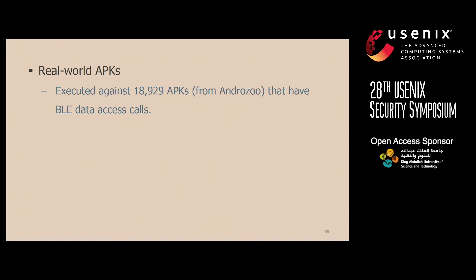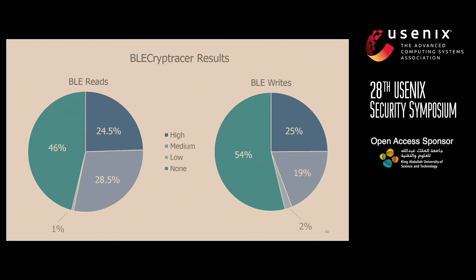We also executed our tool against almost 19,000 real-world APKs that have BLE data access calls. Because of the uncertainty with results at medium and low confidence, I'm only focusing on those results where an APK was identified as having crypto with high confidence or where no crypto was identified at all. We can see that almost half of all APKs actually don't seem to have end-to-end protection for their BLE data.